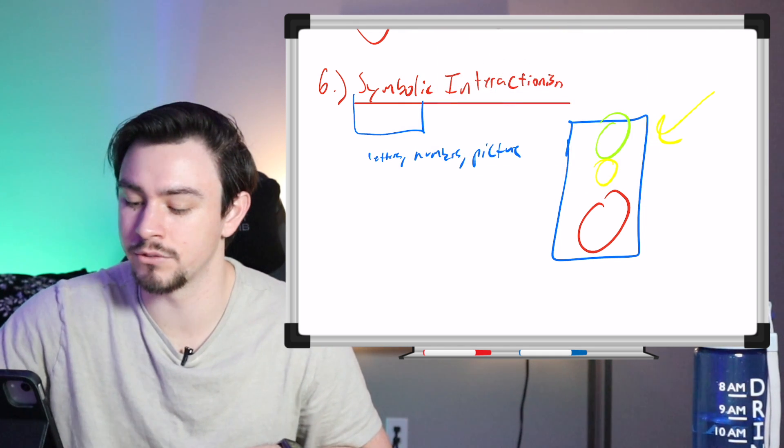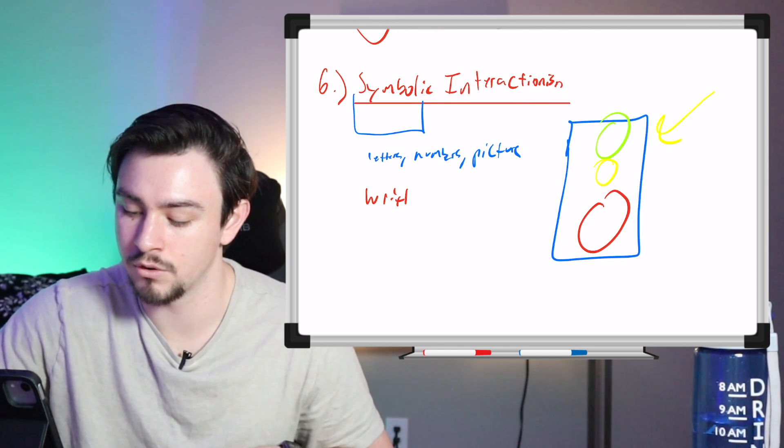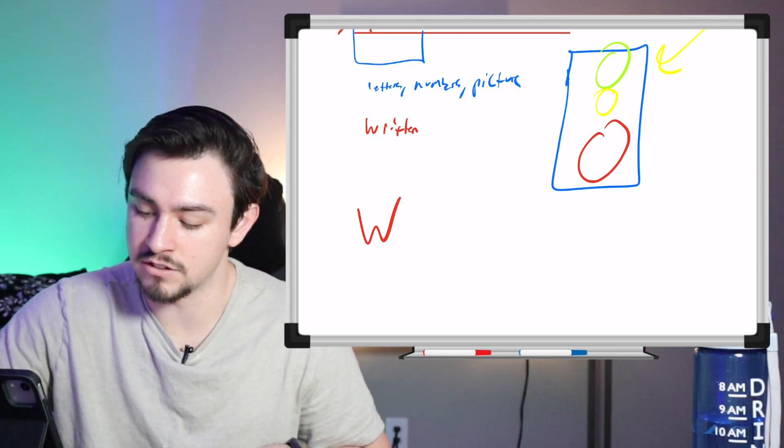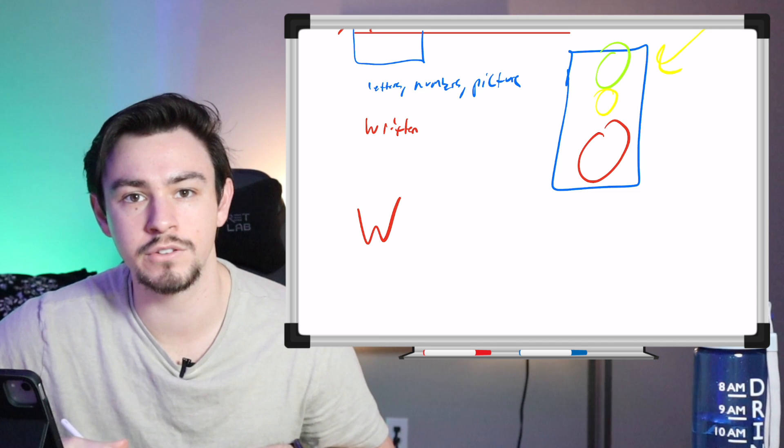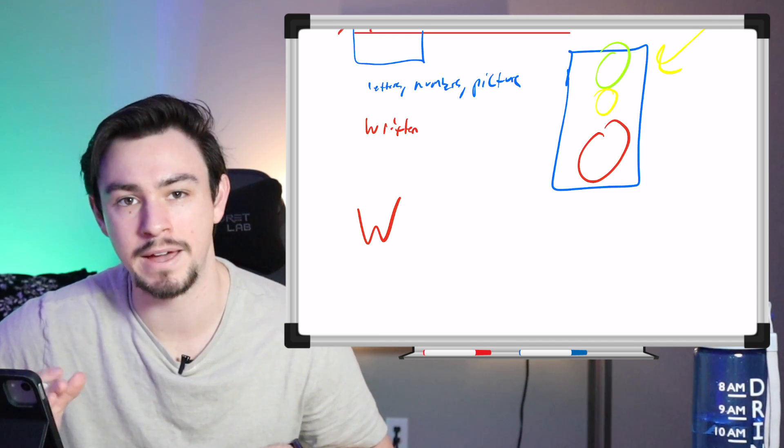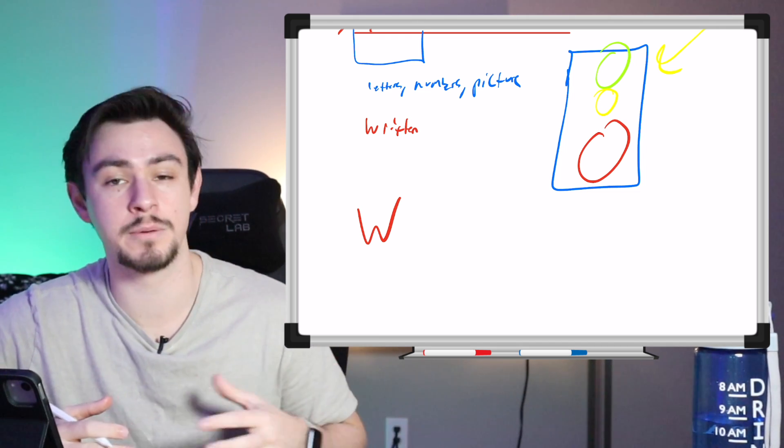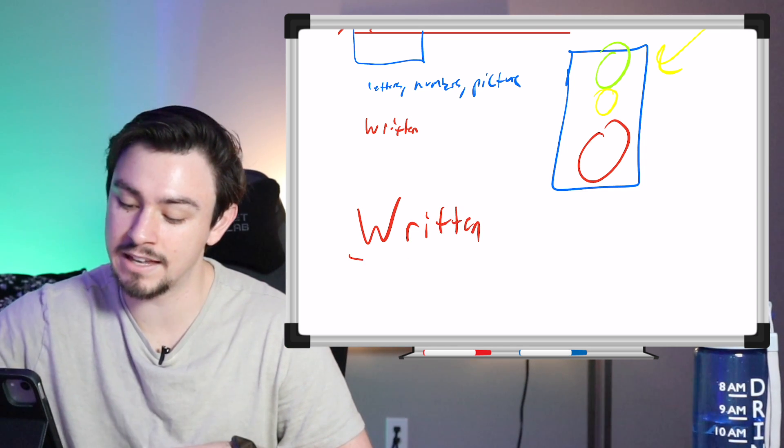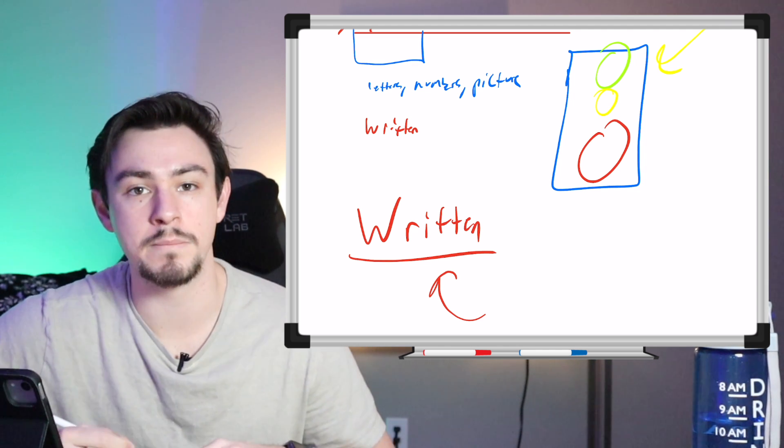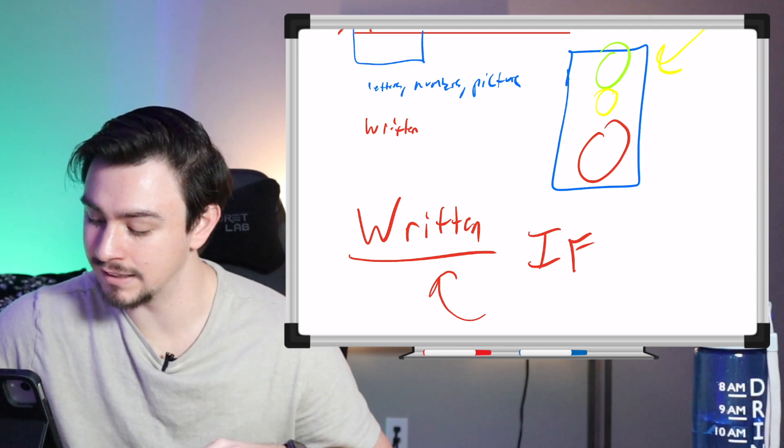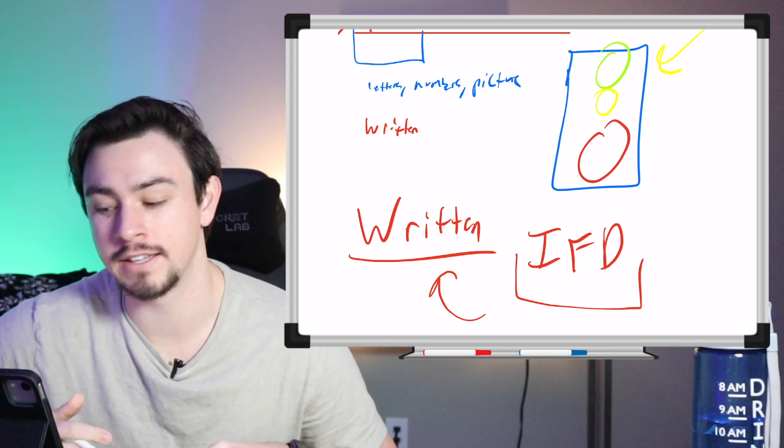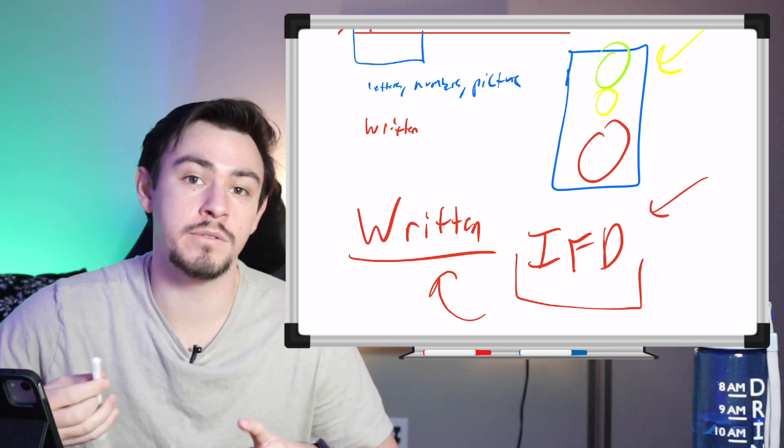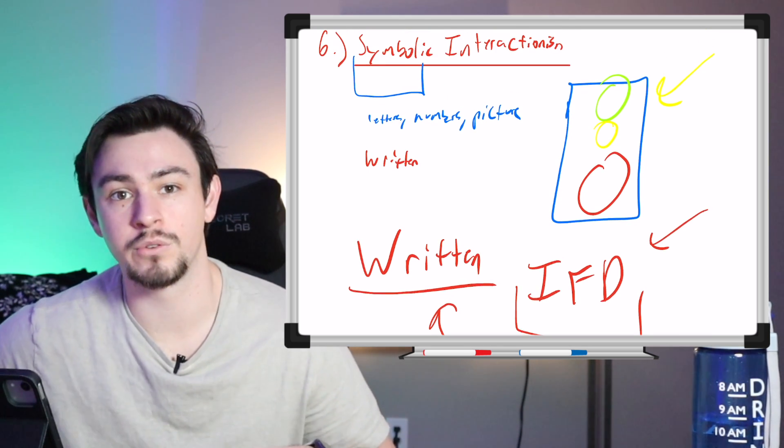And really, the easiest way to think about this is like written language, right? I mean, is it not insane that a W means something to you? Like this is just a drawing. This is just a scribble on an iPad. But symbolic interactionism is an attempt to convey to you that whenever I put these sketches next to each other, you know what they mean. Whenever I put these letters together that seemingly mean nothing, you know that this is talking about a YouTube channel. So that's what symbolic interactionism is. That is the six sociological theories.